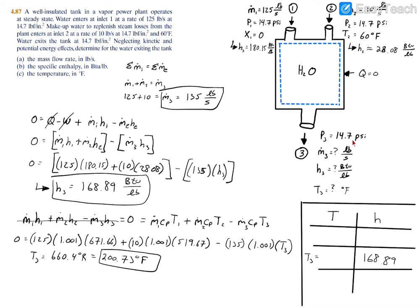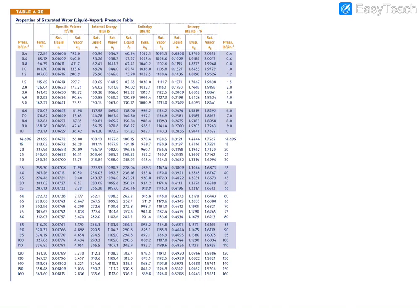We have a few givens: 14.7 PSI and 168.89 BTU per pound. Let's see where we are on the vapor dome. If we turn to table A3E for pressure and go to 14.7 PSI, we can see what the saturated liquid specific enthalpy and saturated vapor specific enthalpy are. We have 168.89, which is less than the saturated liquid. So we have a compressed liquid. As a result, we can interpolate using the saturated liquid specific enthalpies.